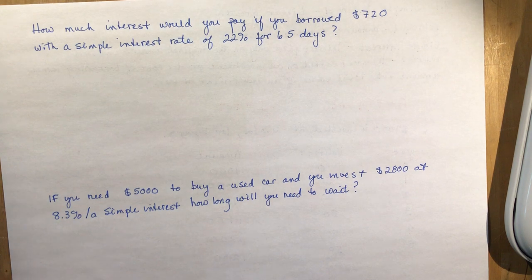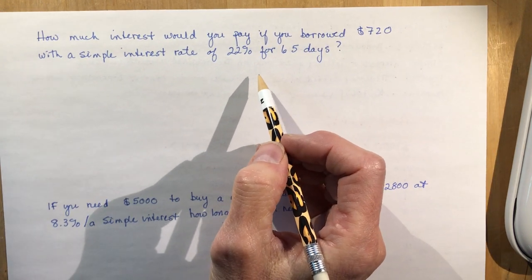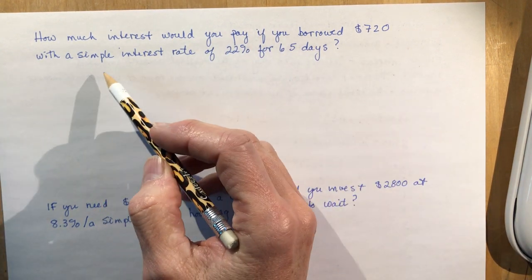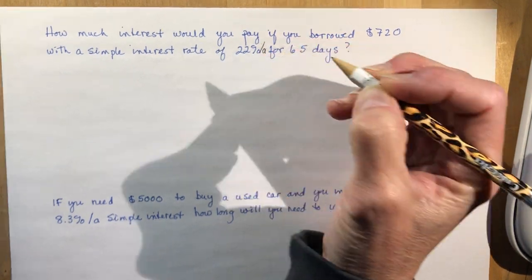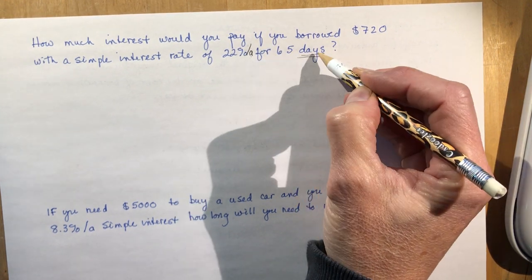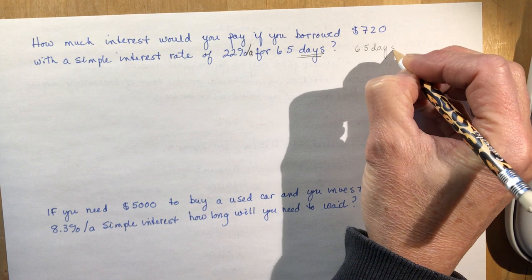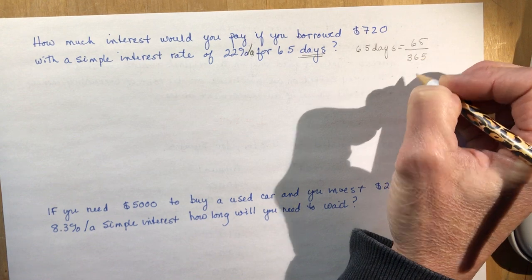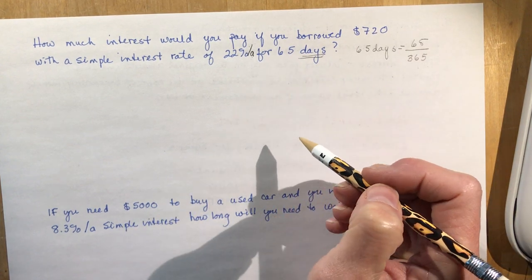Let's look at a couple of examples. This is probably the easiest and probably the least used type of financing with simple interest. How much interest would you pay if you borrowed $720 with a simple interest rate of 22% per annum for 65 days? My rate is in years, my term is in days. 65 days, you're going to have to write that in terms of a year. There's 365 days in a year.